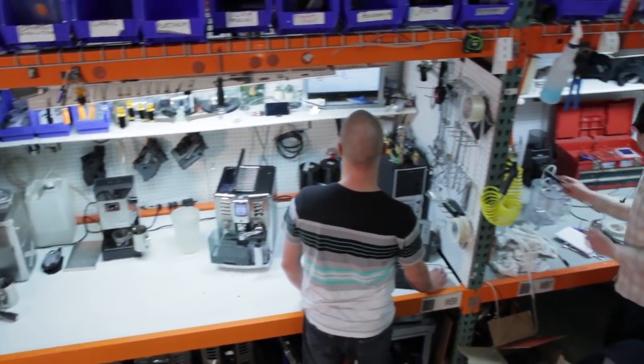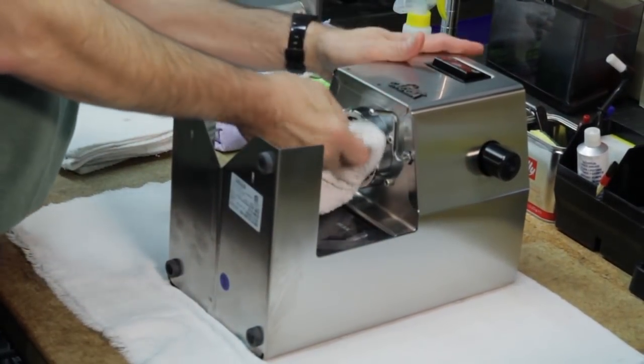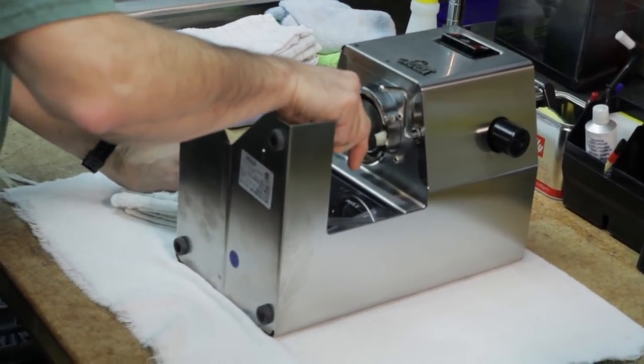After we've gone through the checklist, the machine gets sent over to the cleaning station. At that point, the machine is wiped down thoroughly and given another inspection for the housing or anything that doesn't look quite right. Those guys are trained to do that.